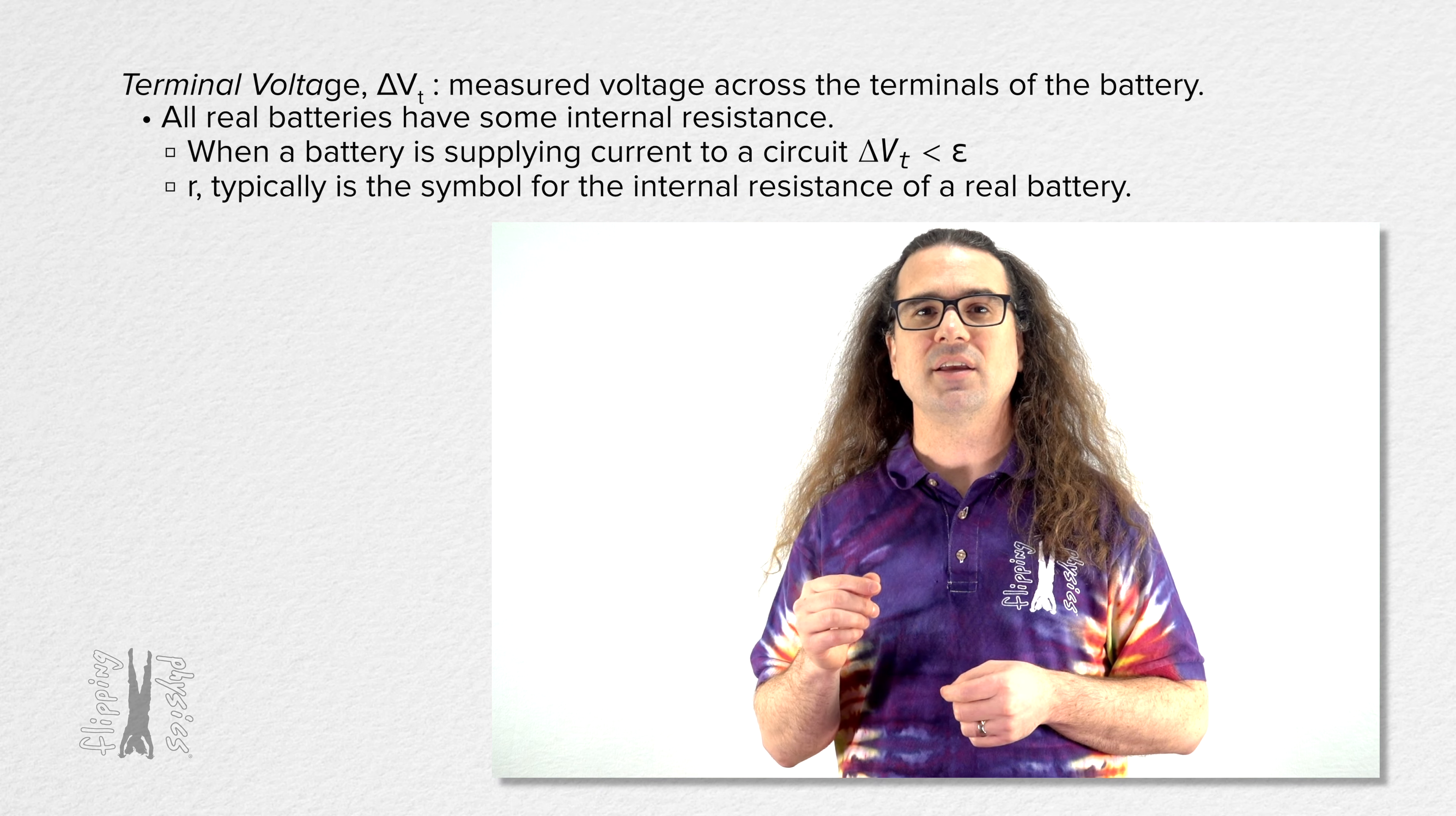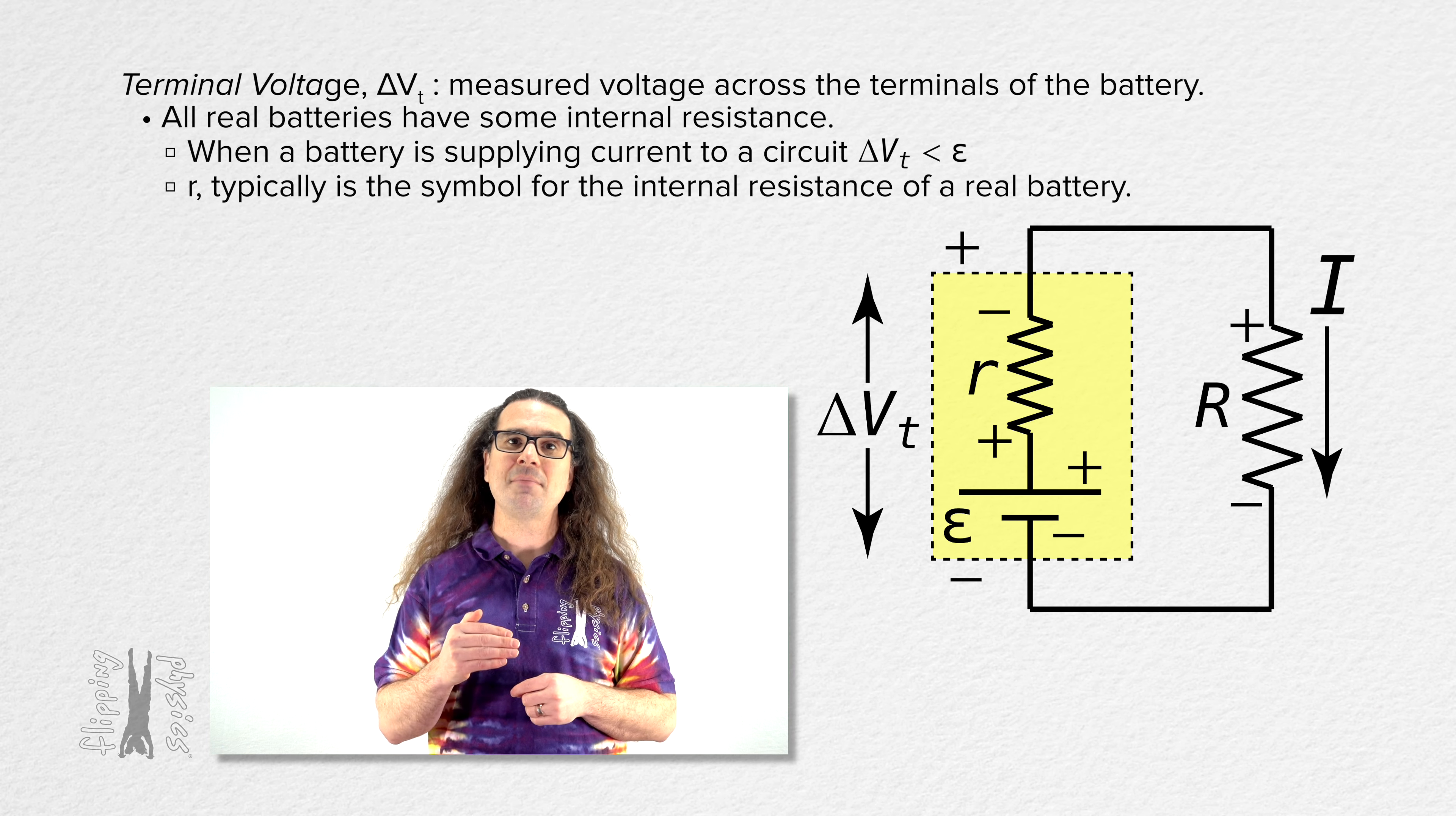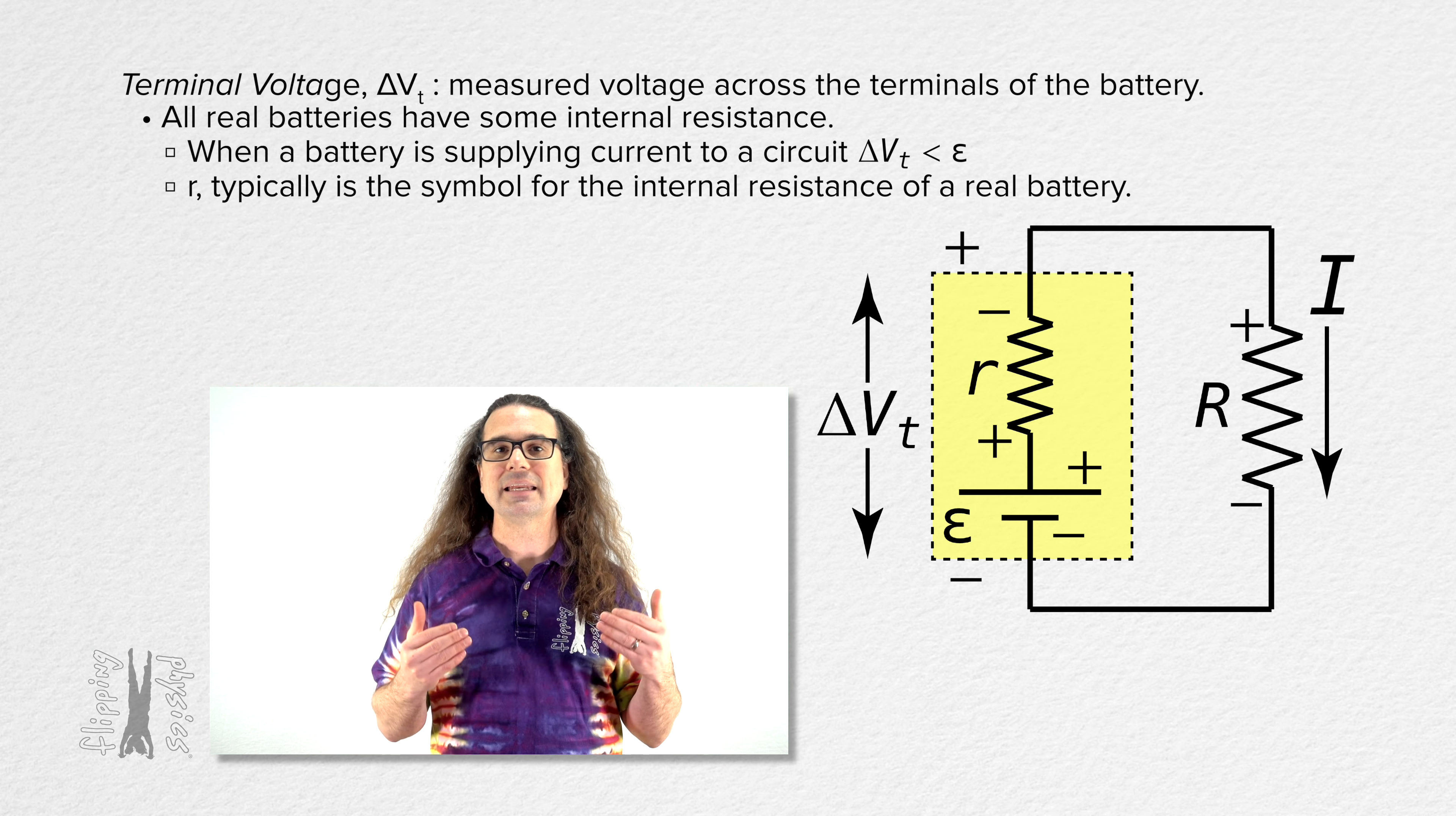Typically, the symbol for the internal resistance of a battery is a lowercase r and one way to illustrate a real battery in a circuit is by combining an EMF with a resistor and putting a box around that combination. In this circuit, the real battery is highlighted in yellow.